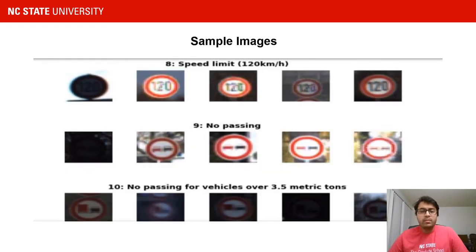So here are some sample images from our dataset. Some of the examples are speed limit, no passing, and so on.